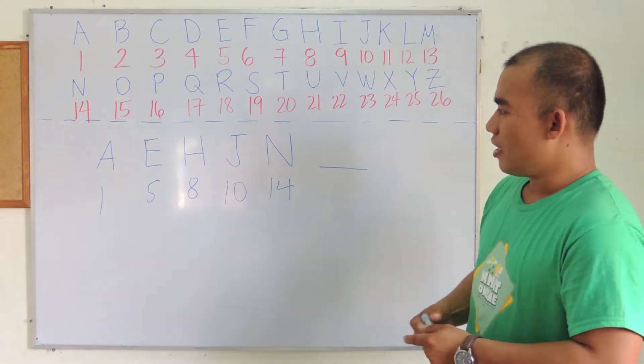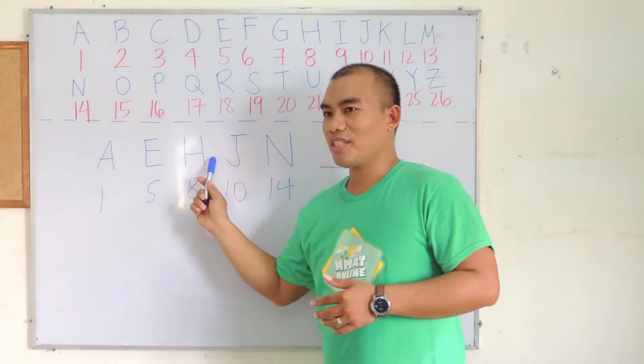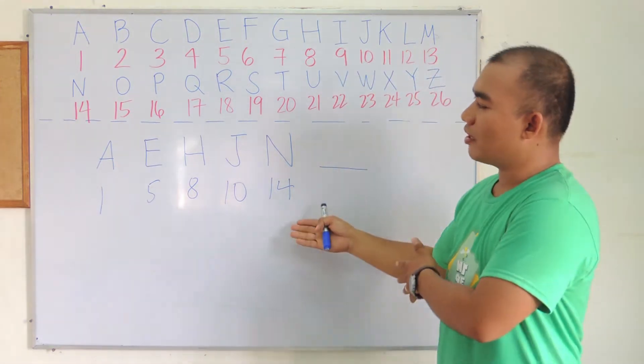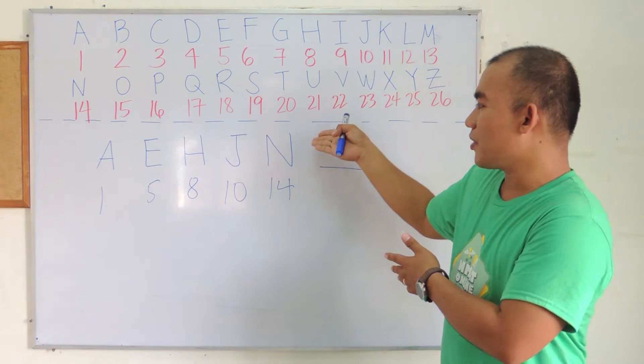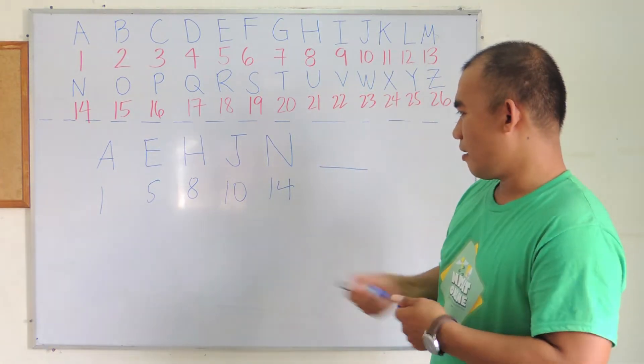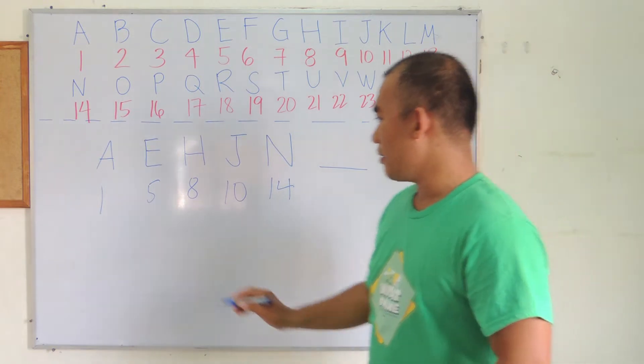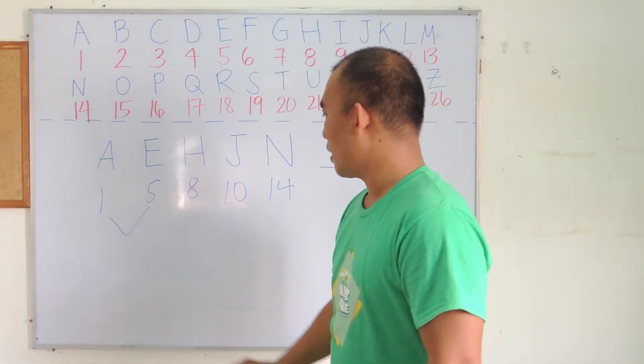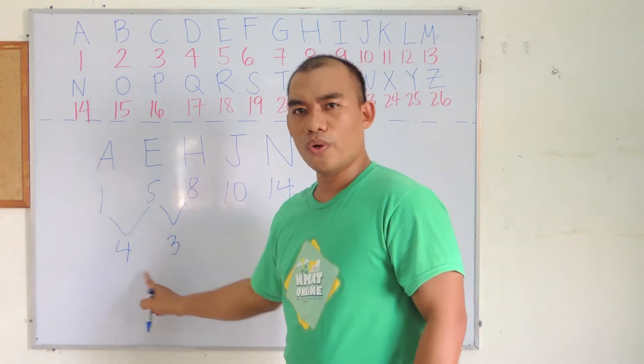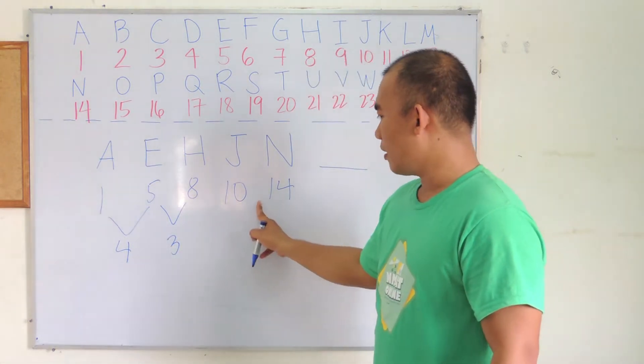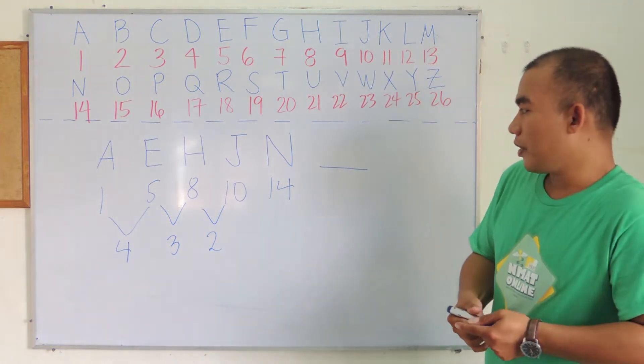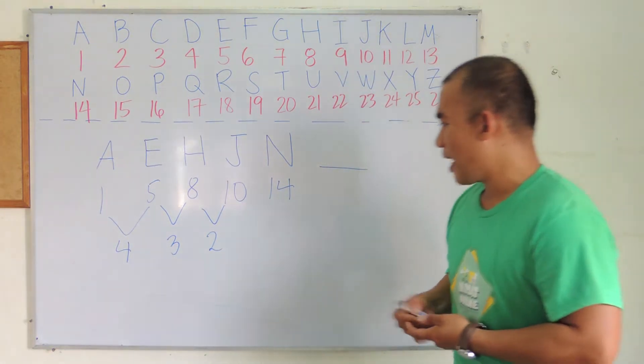So what we have is a letter series converted into a number series. We're going to deal with this letter series now as a number series. We have from 1 to 5, that's plus 4. 5 to 8 is plus 3. 8 to 10, that's plus 2. Now from 10 to 14, we have plus 4.